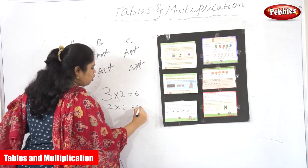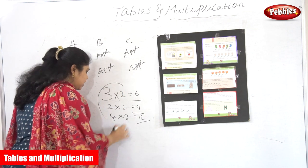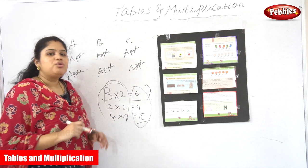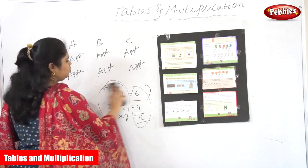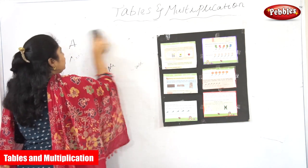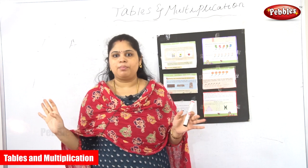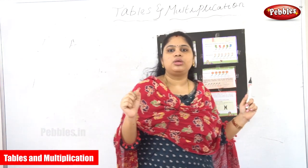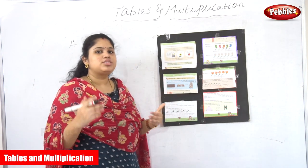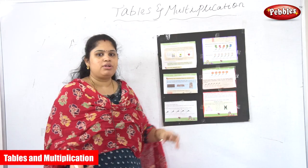I know the tables, so I just write the answers: three into two is six, two into two is four, four into three is twelve. But you may be confused about how you're getting the answers here. To do multiplication easily, we need to learn the multiplication tables. You cannot separate multiplication from tables — if you want to learn multiplication, you must know the tables. Let's first understand the basics of multiplication.